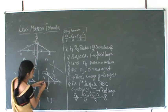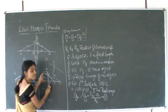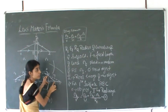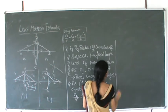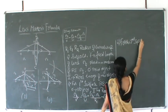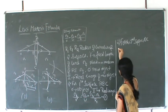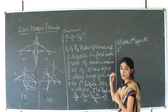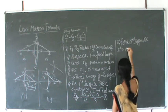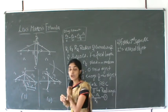The converging ray PI' is incident on the surface ADC, undergoes refraction, and meets at point I on the principal axis. For the second surface ADC, I' acts as the virtual object and I is the final real image. I' acts as the virtual object.